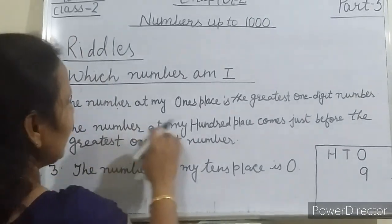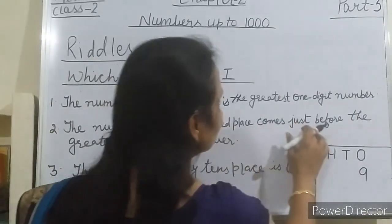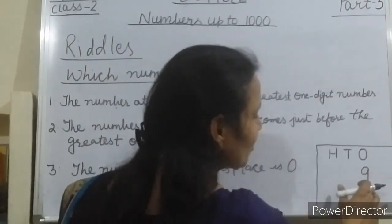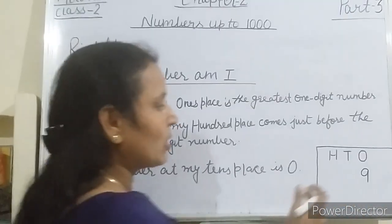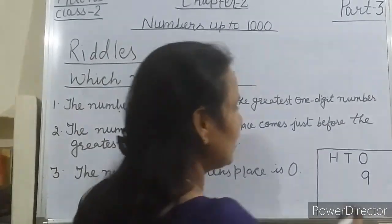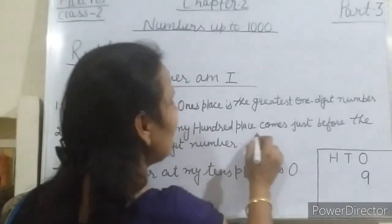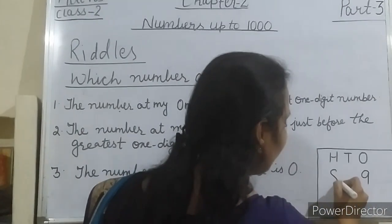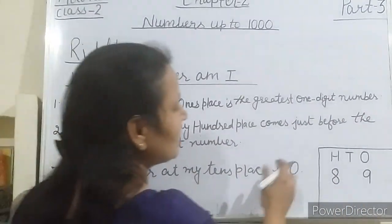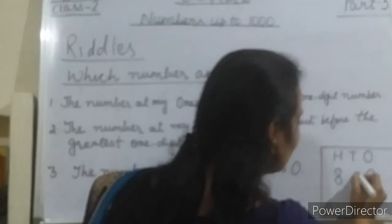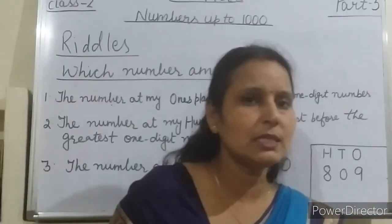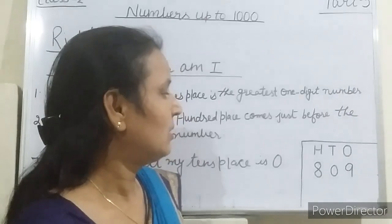The number at my hundreds place comes just before the greatest 1-digit number. The greatest 1-digit number is 9, and what comes before 9? Very good — 8. So it will come at the hundreds place — write 8. The number at my tens place is 0. So what's the number, students? 809.